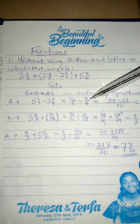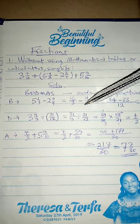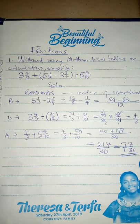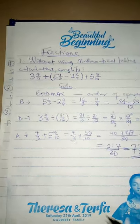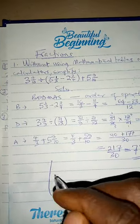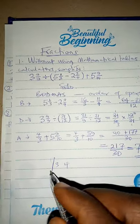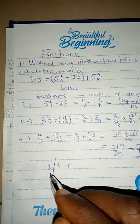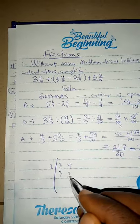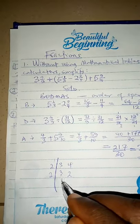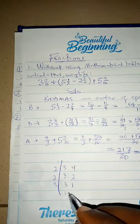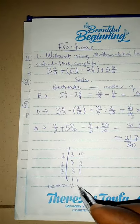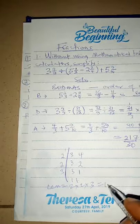After that, find the LCM of the denominators 3 and 4. To get the LCM of 3 and 4: look for a number that will divide one of them. Since 2 can't go into 3, you get 2, 2, 1, 3, then 1, 1. The LCM is 2 times 2 times 3, which is 12.